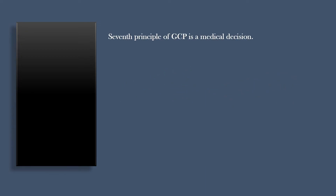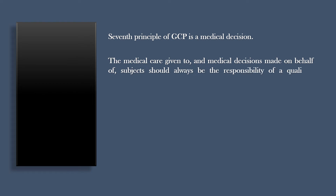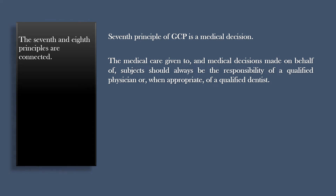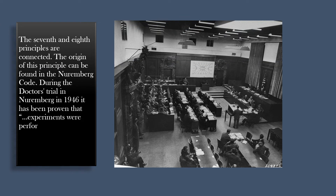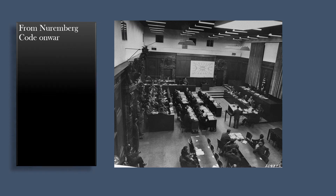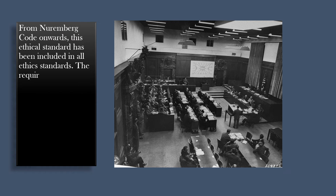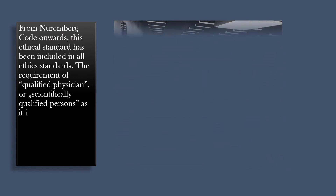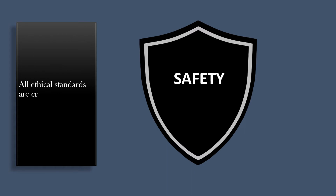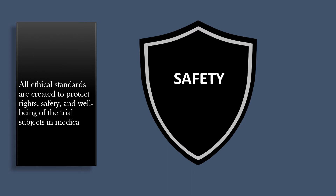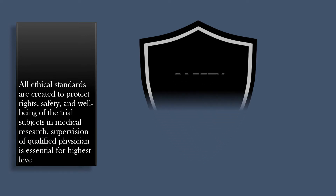The seventh principle of GCP is medical decision. The medical care given to and medical decisions made on behalf of subjects should always be the responsibility of a qualified physician or, when appropriate, of a qualified dentist. The origin of this principle can be found in the Nuremberg Code. During the doctor's trial in Nuremberg in 1946, it was proven that experiments were performed by unqualified persons and conducted at random for no adequate scientific reason. From the Nuremberg Code onwards, this ethical standard has been included in all ethics standards. The requirement of a qualified physician is directly related to patient safety, as supervision by a qualified physician is essential for the highest level of medical care.